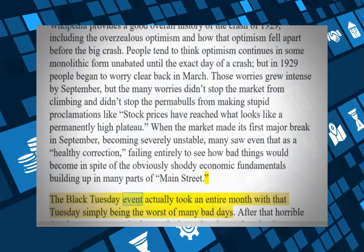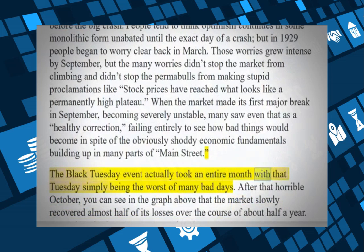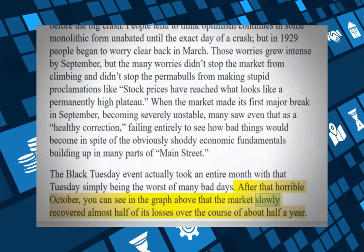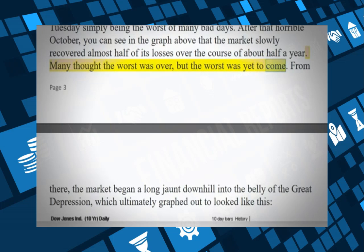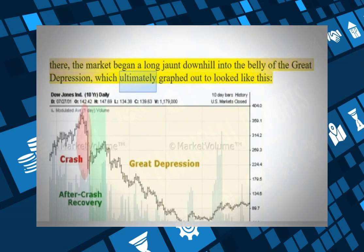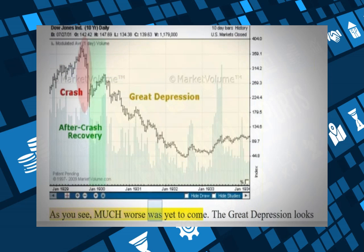The Black Tuesday event actually took an entire month, with that Tuesday simply being the worst of many bad days. After that horrible October, the market slowly recovered almost half of its losses over about half a year. Many thought the worst was over, but the worst was yet to come. From there, the market began a long jaunt downhill into the belly of the Great Depression, which ultimately graphed out to look much worse.